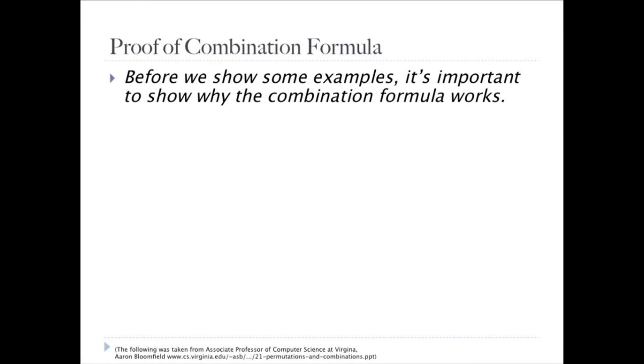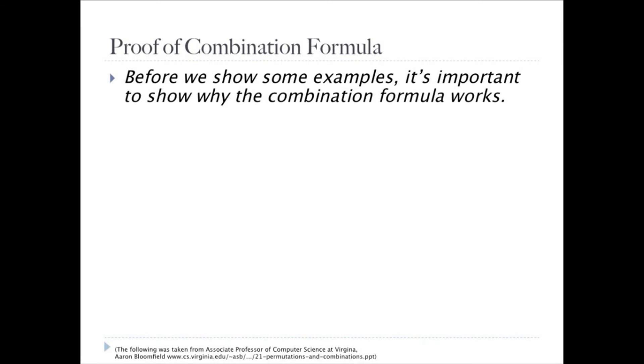Now if we look at it more specifically, we can use this common example to really understand the proof. Let C(52,5) be the number of ways to generate unordered poker hands. The number of ordered poker hands is P(52,5), which is 311,875,200. The number of ways to order a single poker hand is P(5,5), which is 5 factorial, and that is 120.